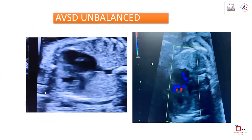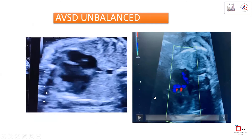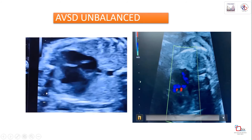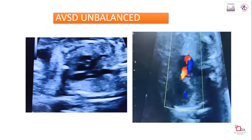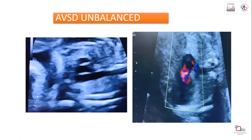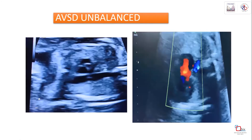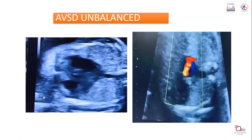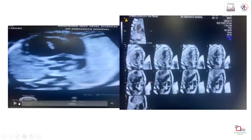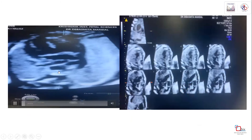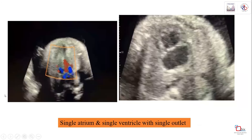This is a case of unbalanced AVSD diagnosed on a low-end machine. The diagnosis was made not only from the flap anatomy but from blood flow - a large combined inflow from both atria into the ventricle with no clear valve differentiation, demonstrating how AVSD appears on 2D and color Doppler.